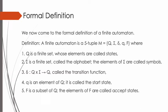We now come to the formal definition of a finite automaton. A finite automaton is a 5-tuple M equals (Q, Σ, δ, q, F), where Q is a finite set whose elements are called states; Σ is a finite set called the alphabet whose elements are called symbols; δ is a function defined as the Cartesian product of Q and Σ going to Q, called the transition function; q is an element of Q called the start state; and F is a subset of Q whose elements are called accept states. You can think of the transition function δ as being the program of the finite automaton.